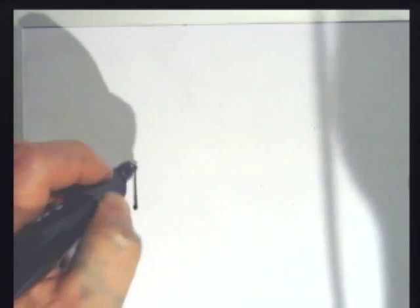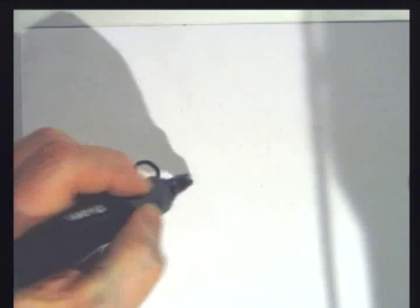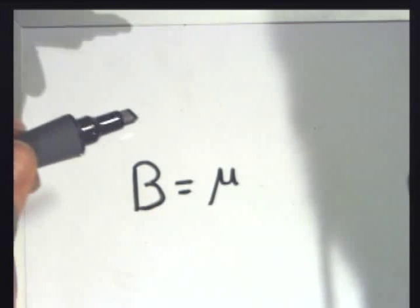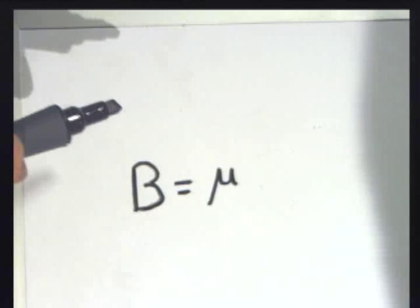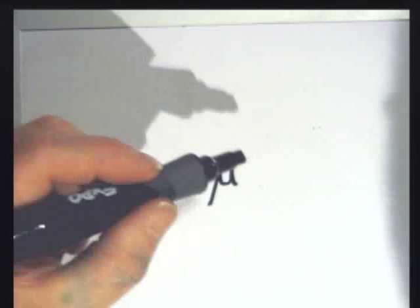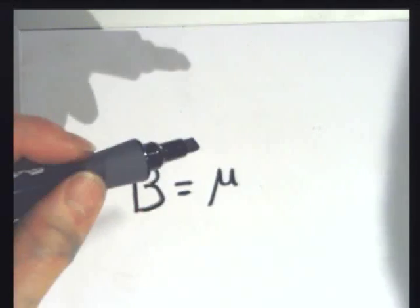Magnetic field is given by the letter B — I don't know why, but that's what it is. This mu that I'm drawing right there is the magnetic permeability, and that tells you how well the magnetic field is being conducted. That's why a lot of electromagnets use a soft iron core, so that it can conduct the magnetic field better.